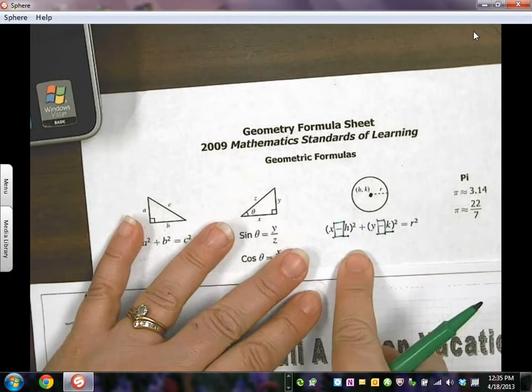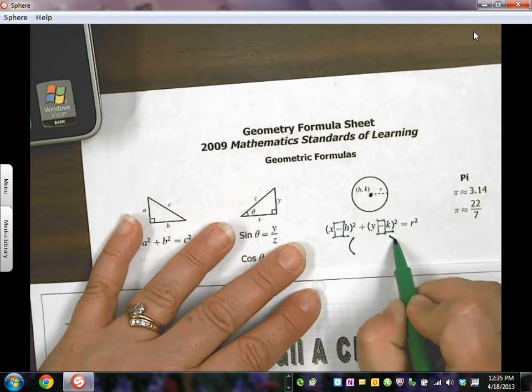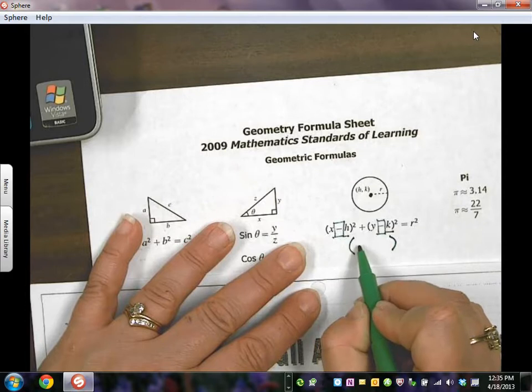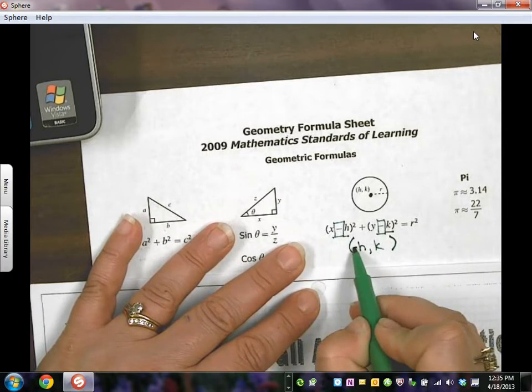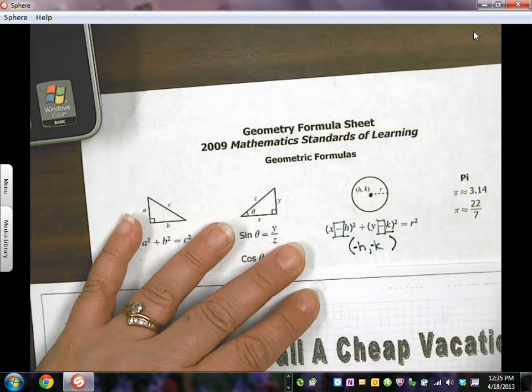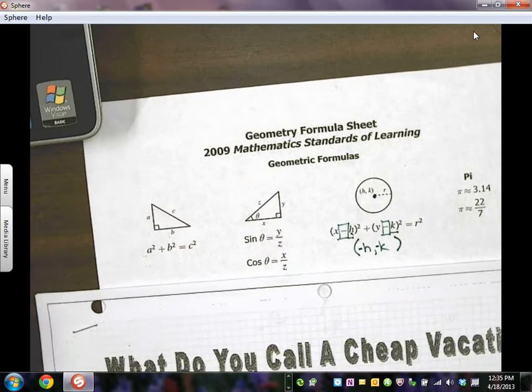But it's important to remember this sign in front of it. If I want to find the center, I've got to make sure I have this negative H as the center and a negative K as the center. So you always want to do the opposite of what's here. Let me show you what I mean in a problem.